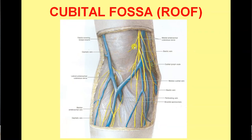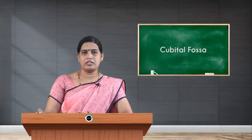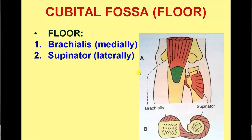In the picture you can see the cephalic vein laterally and basilic vein medially, connected by the median cubital vein. You can also appreciate the medial cutaneous nerve of the forearm, the lateral cutaneous nerve of the forearm, and the bicipital aponeurosis — an expansion from the tendon of biceps brachii — passing medially and inserting to the posterior subcutaneous border of the ulna. These are all the roof relations of the cubital fossa.